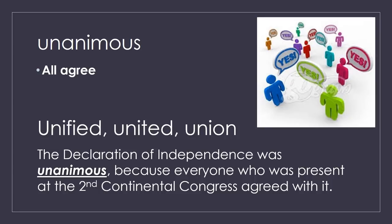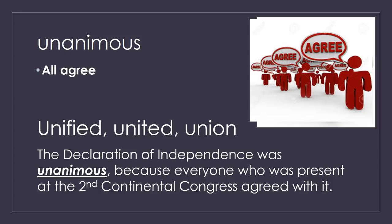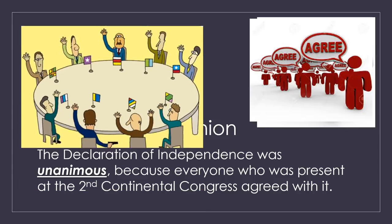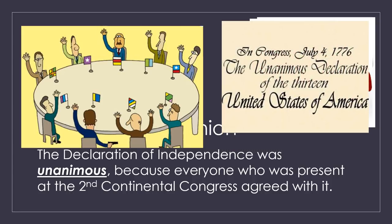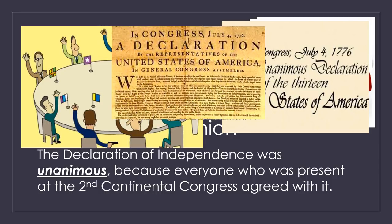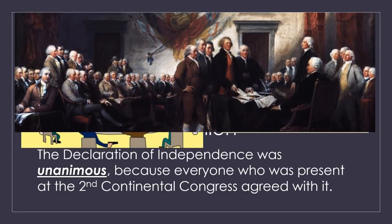The Declaration of Independence was unanimous because everyone who was present at the Second Continental Congress agreed with it. It took a lot of convincing to get all the delegates to unanimously agree to pass the Declaration of Independence and send it to King George III. So it was a very divided room, and then it became a unified room, unanimously agreeing — or ratifying — the Declaration of Independence.